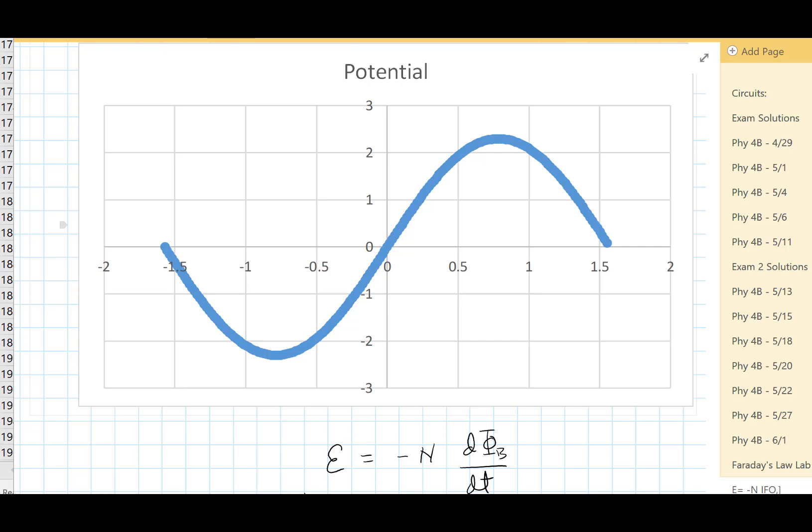When we look at this graph, the emf is how high and low the two peaks go, the peak to peak voltage. The rate of change of the flux is determined by how fast the magnet is moving. If we get the magnet to go faster, the magnetic flux through the coil will be changing at a faster rate. If we make the magnet go slower, it will change at a slower rate. So we drop the magnet from different heights.